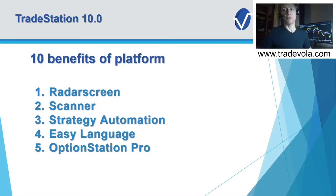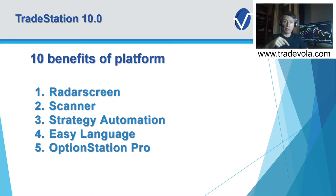We want to start with the five main benefits: Radar Screen, Scanner, Strategy Automation, Easy Language, and Option Station Pro. I would like to present these all within TradeStation itself so we can go a little bit deeper into the details. If you want to have any more information about some of these tools or benefits, feel free to leave us a comment. We are happy to provide more information and give you more details.